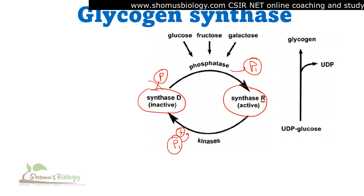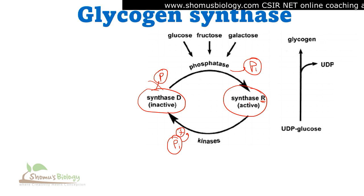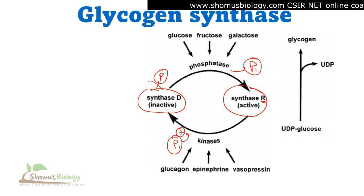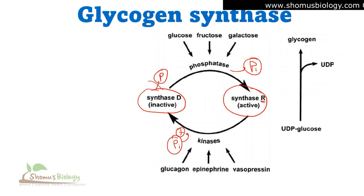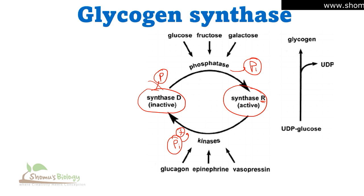This kinase activity is upregulated by the presence of different hormones in the body — the presence of glucagon, epinephrine, and vasopressin. So release of glucagon, epinephrine, or vasopressin is going to convert the glycogen synthase R form, or active form, into the glycogen synthase D form, the inactive form. This is the overall regulation of glycogen synthase enzyme and its role in glycogen metabolism regulation.